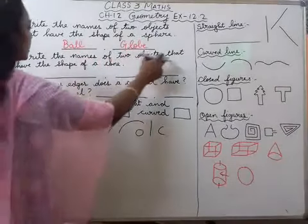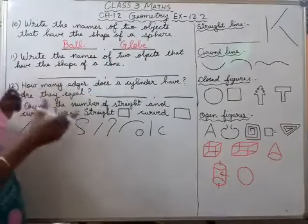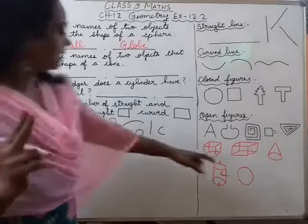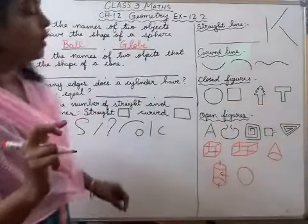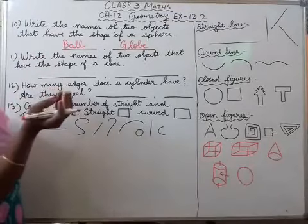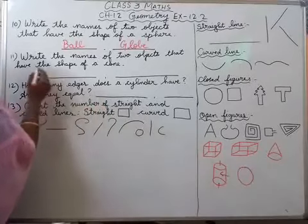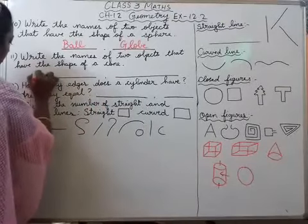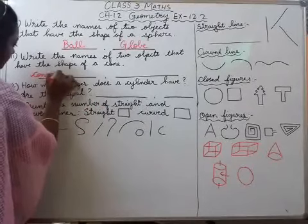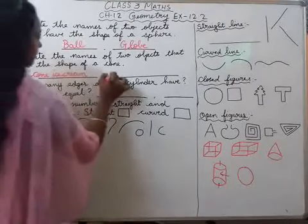Write the names of two objects that have the shape of a cone. Cone shape mein — ice cream cone hai, then birthday cap. So I will write ice cream and birthday cap.